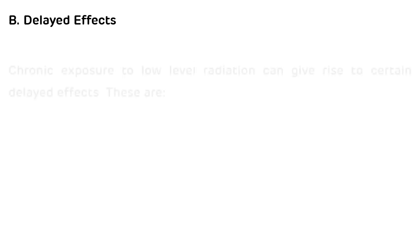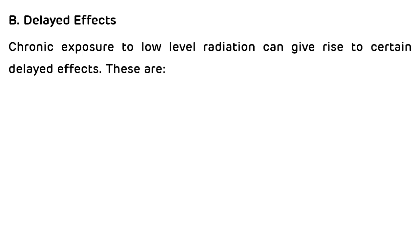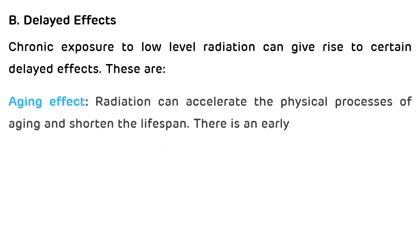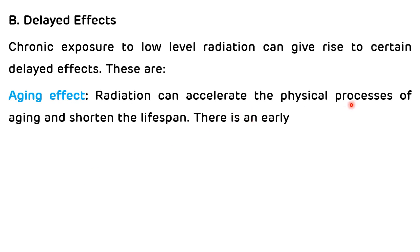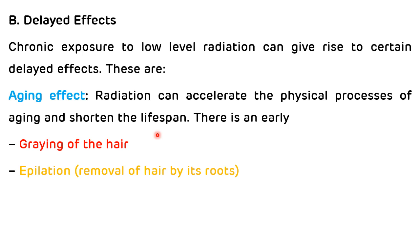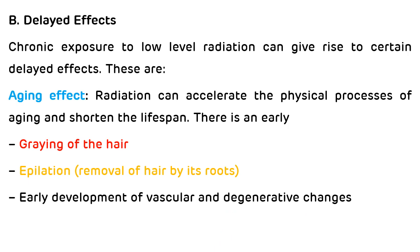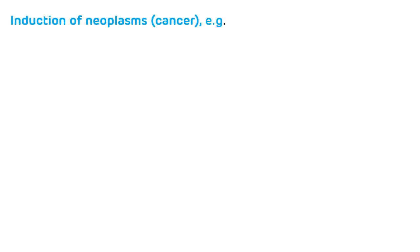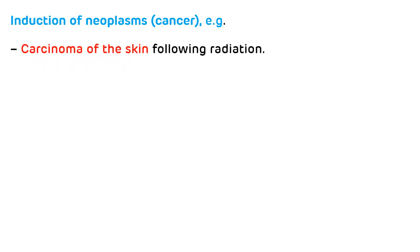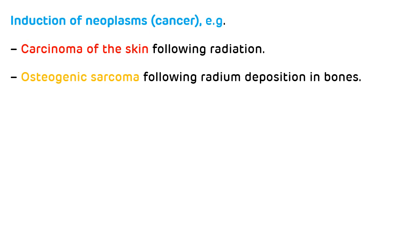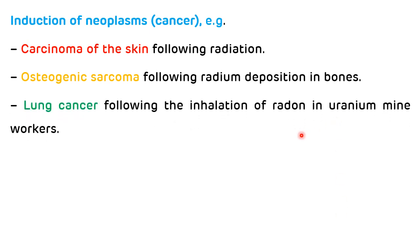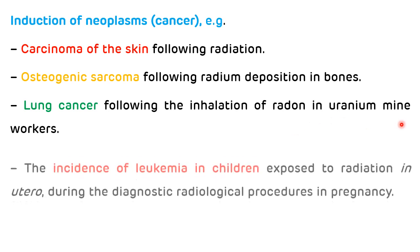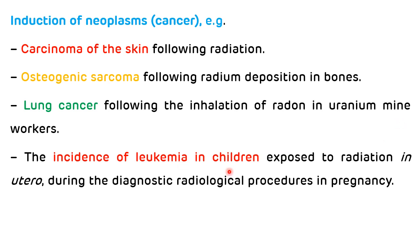Delayed somatic effects: chronic exposure to low-level radiation can give rise to certain delayed effects. These include aging effects — radiation can increase physical processes of aging and shorten lifespan, with early graying of hair, epilation, early development of vascular and degenerative changes, and lenticular cataracts. Delayed effects also include induction of neoplasms such as carcinoma of skin, osteogenic sarcoma following radium deposition in bones, lung cancer following inhalation of radon in uranium mine workers, and increased incidence of leukemia in children exposed to radiation in utero during radiological procedures in pregnancy.